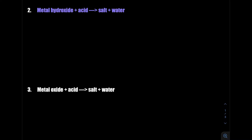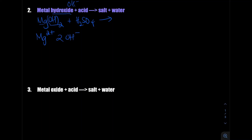The second type of reaction is metal hydroxide plus acid, which produces salt and water. The hydroxide is OH⁻. Let's take magnesium hydroxide reacting with sulfuric acid. We need to be careful here — there's an exchange of ions. Magnesium is in group 2, so it's Mg²⁺, and the OH gives two OH⁻ ions. It's one of the polyatomic ions.